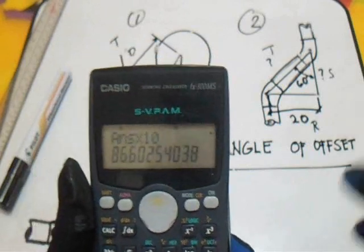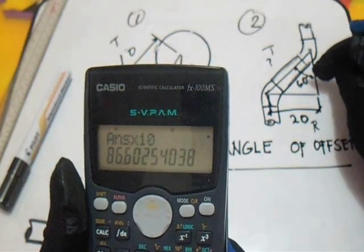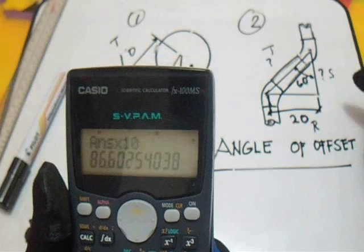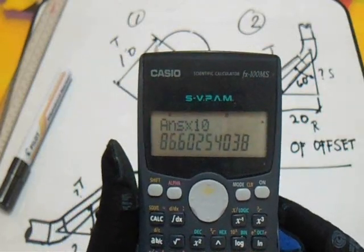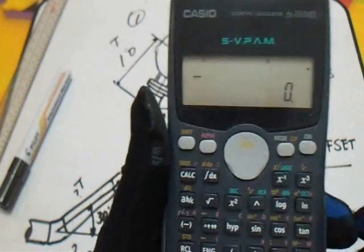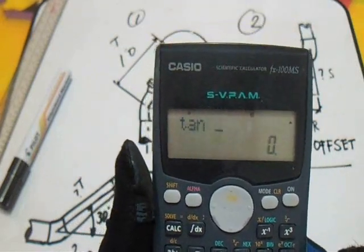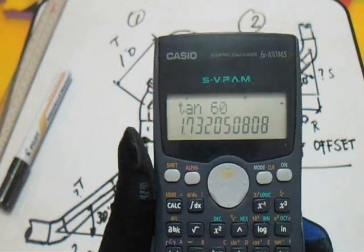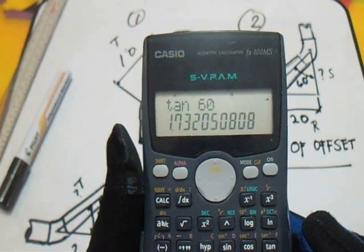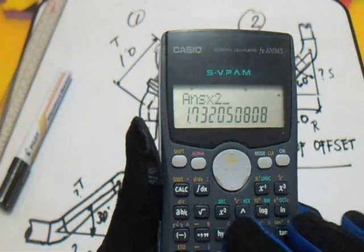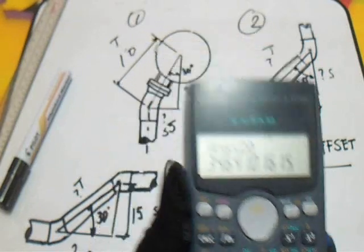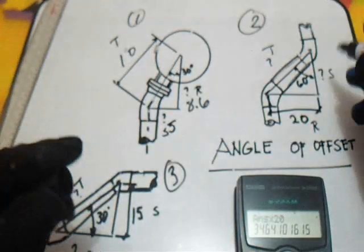Next, question number two. Our angle is 60 degrees and our known is run = 20. Let's find the set and travel. So for the set, tangent 60 degrees multiplied by 20. Our answer is 34.6 for our set.